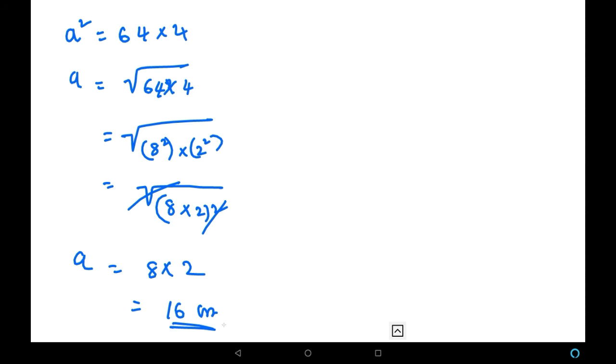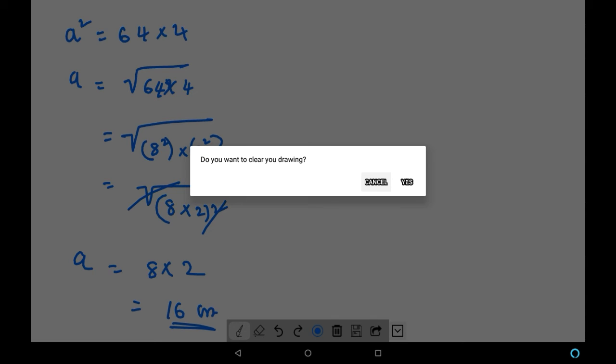So we got the side value. The side is 16 centimeters. Next, we have to find its perimeter. Perimeter of an equilateral triangle.